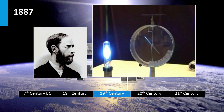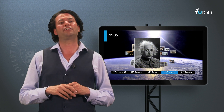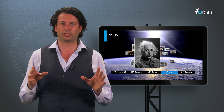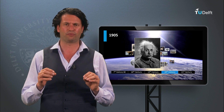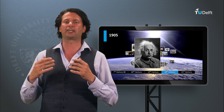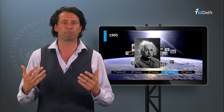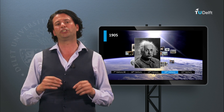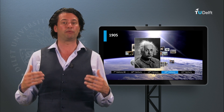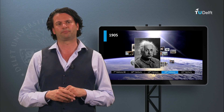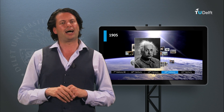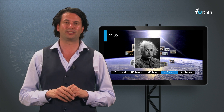In 1887, Hertz discovered the photoelectric effect, which is the effect that some charged objects, when exposed to ultraviolet light, lose their charge faster. In 1905, Albert Einstein published a paper in which he explained the photoelectric effect, assuming that light energy is carried in quantized packages of energy. Nowadays we call these packages photons. For this paper, Einstein received the Nobel Prize in 1921.